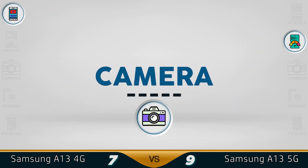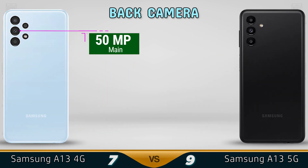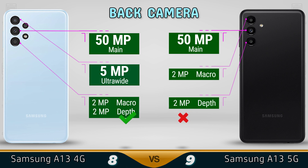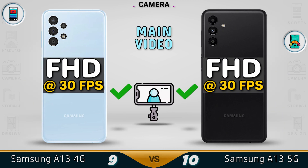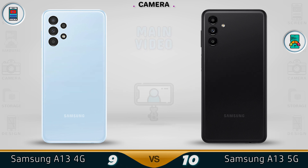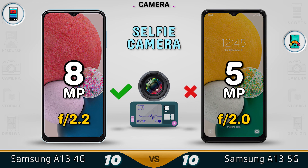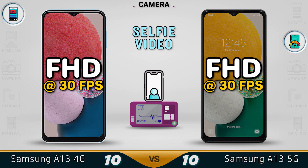Now for the camera, starting with the rear camera first. Both devices are 50 megapixels each, but only the 4G version comes with an ultra-wide lens. The macro and depth sensor are 2 megapixels on both devices. Video recording is only Full HD at 30 frames per second — no 4K. The main selfie camera is slightly better on the 4G at 8 megapixels, but in low light the 5G will perform a little bit better. Selfie video is Full HD at 30 frames per second on each. We're going to give the better camera to the A13 4G.